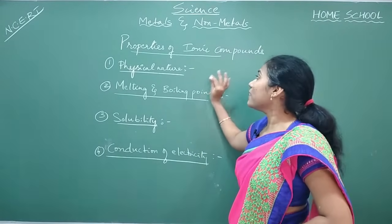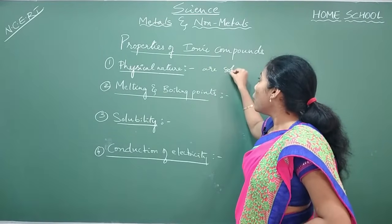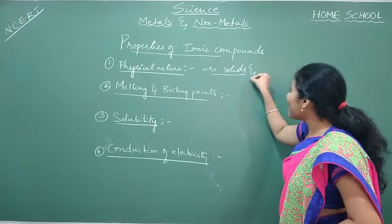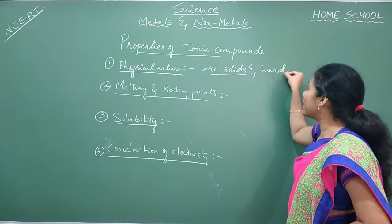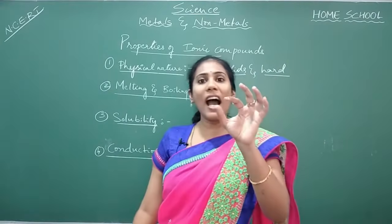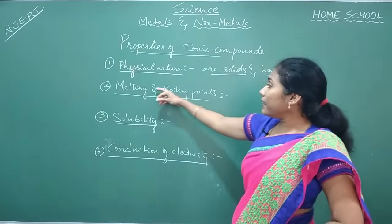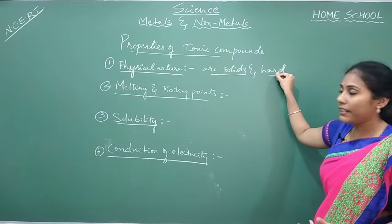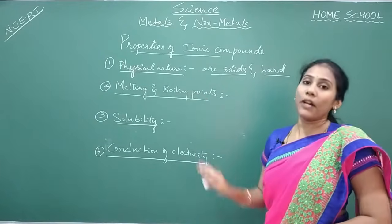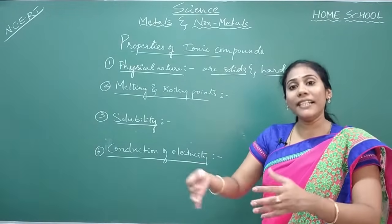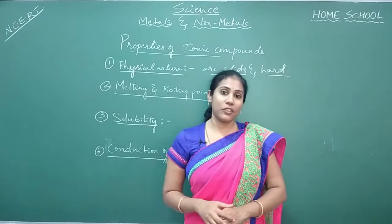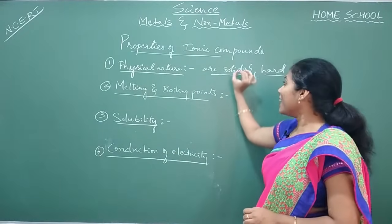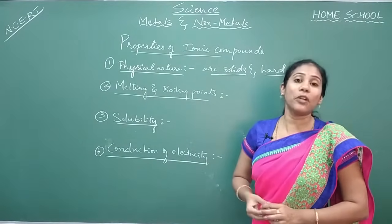The first property is the physical nature — physically, what do they look like? Are they solids, liquids, or gases? All ionic compounds are solids, and they are hard. They are not soft — they are hard solids. Coming to the next property, melting and boiling point: since they are hard, it is difficult to melt and boil them. If you want to melt them, you need to heat at very high temperatures. So generally, ionic compounds have high melting and boiling points.